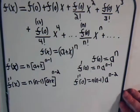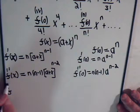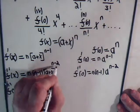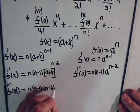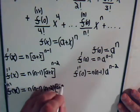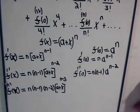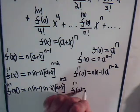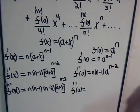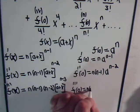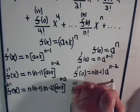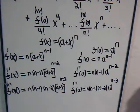For the third derivative, that equals n times n minus one times n minus two times a plus x to the n minus three power. Evaluating the third derivative when x equals zero gives n times n minus one times n minus two times a to the n minus three.